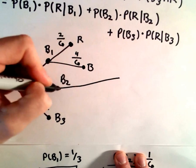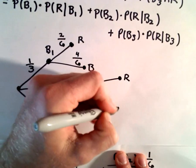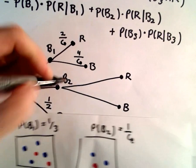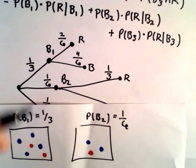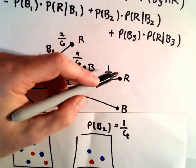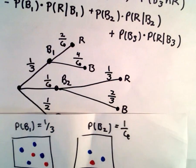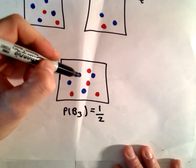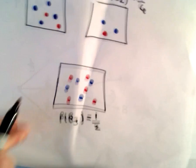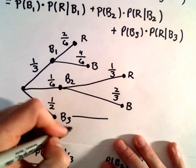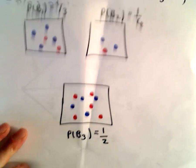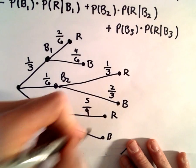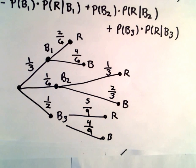We do the same for bowl two: red or blue. Drawing from bowl two there are three total, one is red, so there's a one-third probability we'll pick a red coin and two-thirds we'll pick a blue coin. Lastly, from bowl three we have nine coins total. Five are red, so there's a five-ninths probability we'll get a red one and four-ninths probability we'll get a blue one.